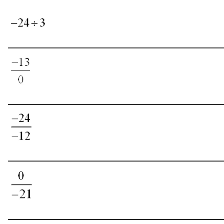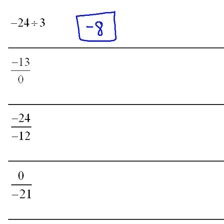Let's look at this first problem: negative 24 divided by 3. If we just do the plain division, 24 divided by 3 is 8. Now we concentrate on our signs. We have opposite signs — a negative and a positive — so according to our rule the answer will be negative. Our answer is negative 8.